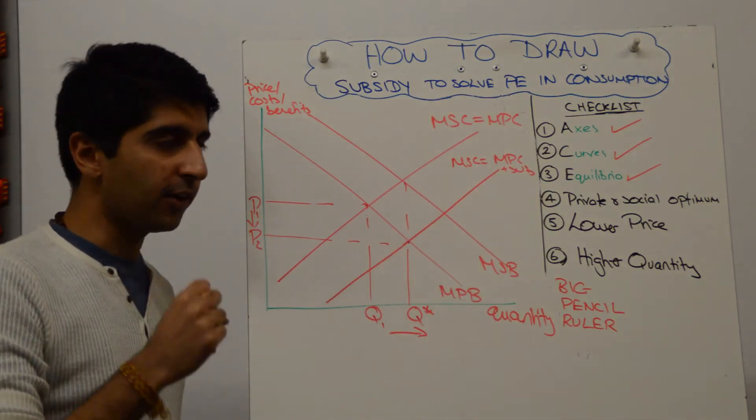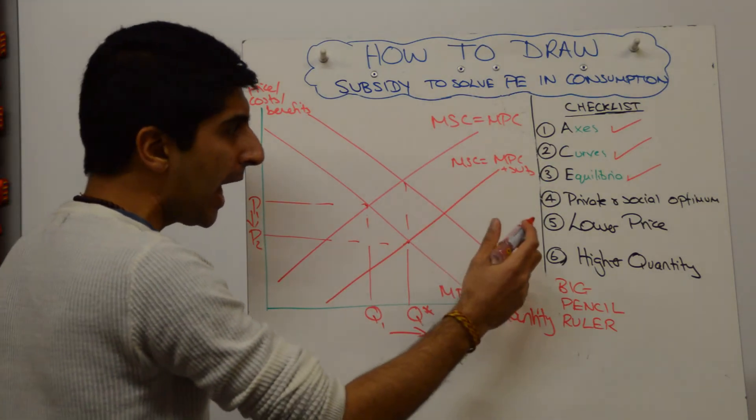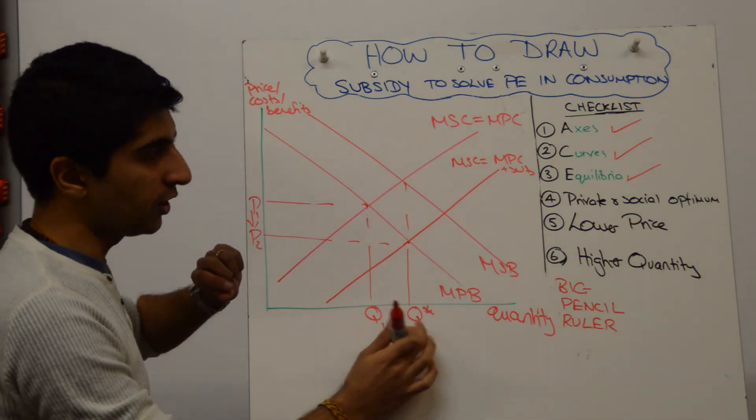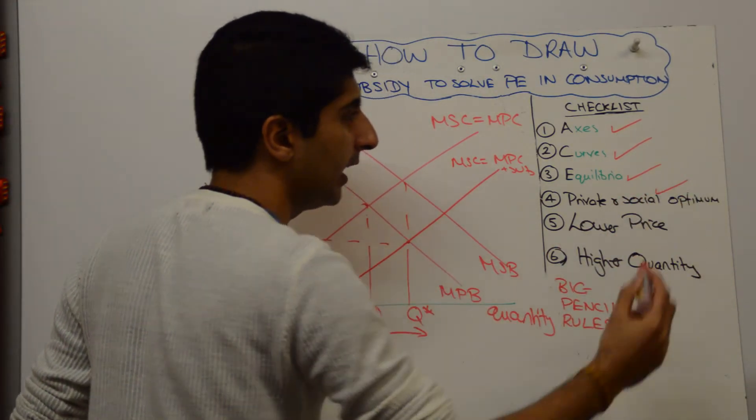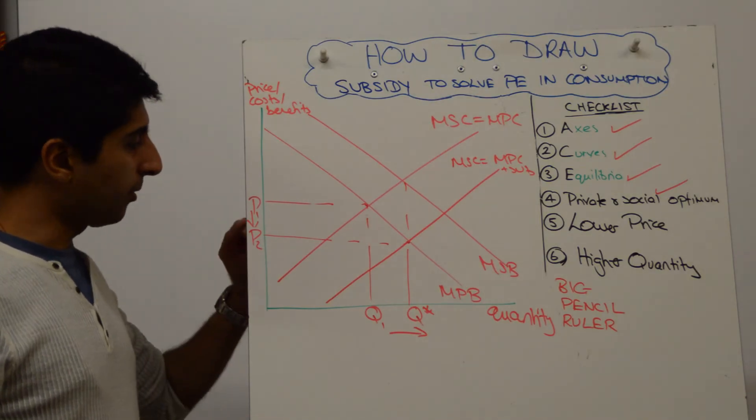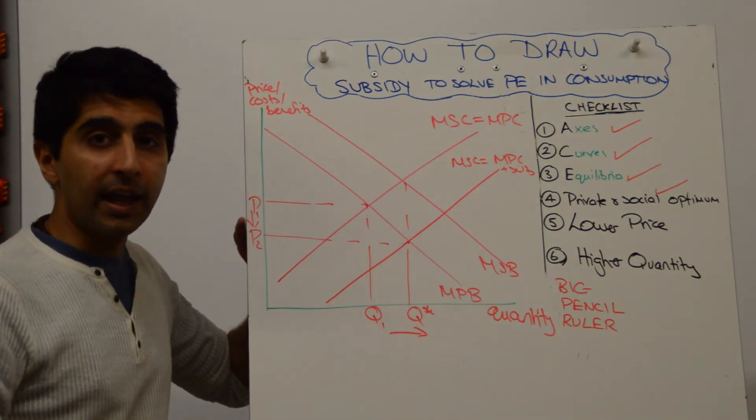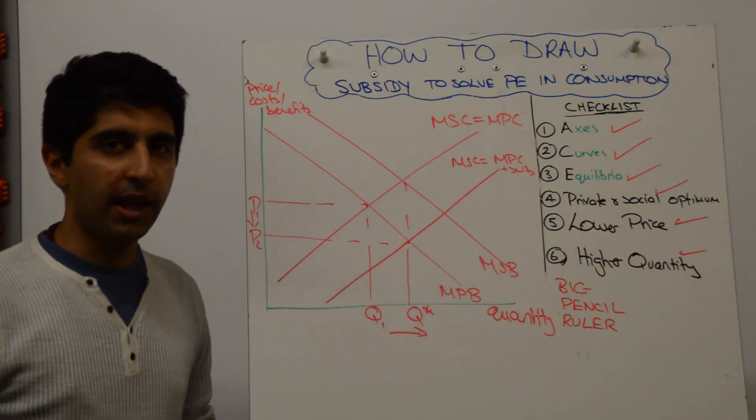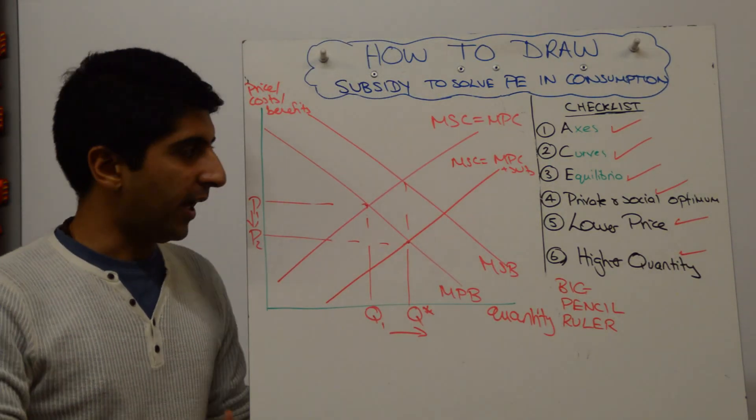Hence, the ACE diagram tip is very useful. Have you made it clear that we were at the private optimum and we're now at the socially optimum level? Yes, that's clear. Have we made it clear that there is a lower price and a higher quantity? Yes, the arrows make it clear that price and quantity have both changed.